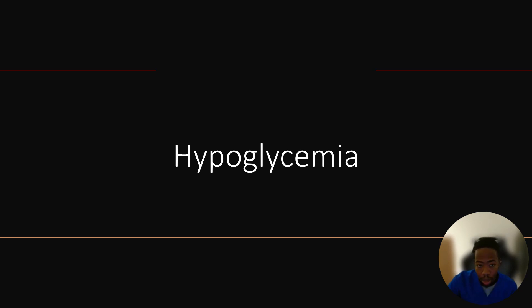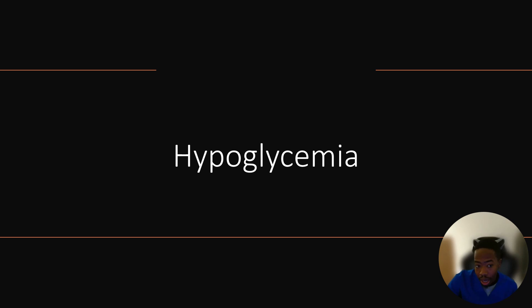Hypoglycemia can occur while a person sleeps as well. Signs of this might include confusion and lethargy upon awakening, and damp clothes and sheets from sweat. If hypoglycemia persists long enough, it may become worse, leading to a loss of coordination and drowsiness to the point where a person becomes unresponsive. In a conscious person, hypoglycemia can be treated by eating carbohydrates. In an unconscious person, it can be treated through medications like glucagon, which help to raise blood sugar rapidly.